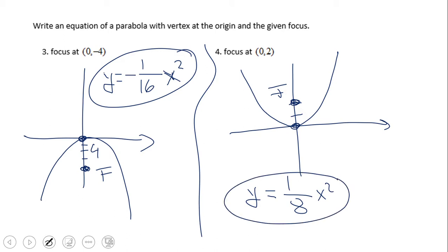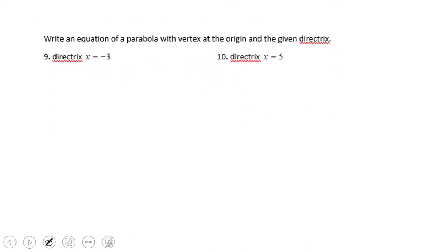If you have this answer for number four, then you did an excellent job. Again, c is two in this case, the distance from focus to the vertex.